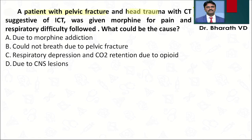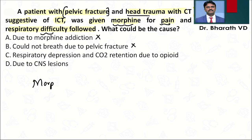Coming to the third question: a patient with pelvic fracture and head trauma, with CT suggestive of intracranial hypertension, was given morphine for pain, and respiratory difficulty followed. The patient had a suggestion of raised intracranial pressure and was given morphine, but respiratory difficulty increased. Morphine is contraindicated in head injury patients.